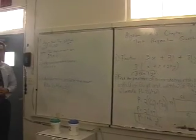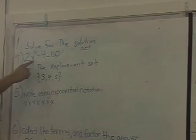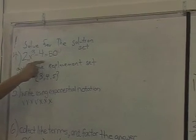Alright, number four over here. How are you going to do it? Can you get in there? Solve for the solution set: 2x³ - 4 = 50.